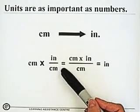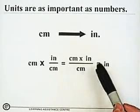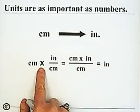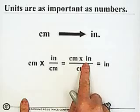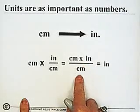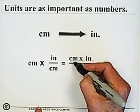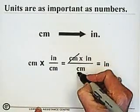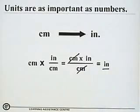That gives us centimeters times inches divided by centimeters. Our centimeters will cancel, and we'll be left with the units of inches, which is what we're looking for.